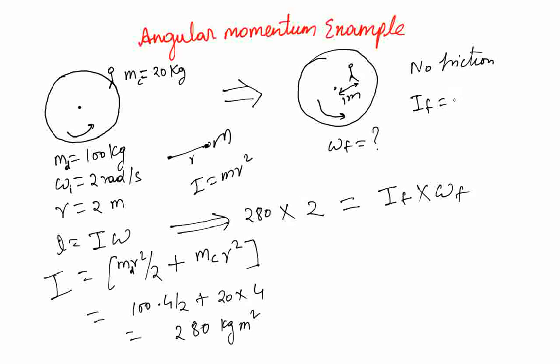Because of the disk, nothing is going to change. It's going to be 200 plus 20. Now, r is just 1. So it's going to be 20 times 1². And that gives us 220 kg m².